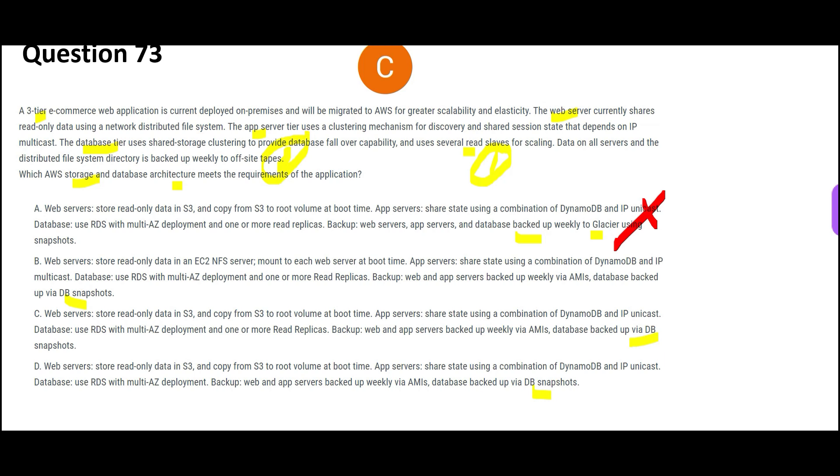Based on the third tier, that is database tier, we tried to find out A is wrong. Now let us look at the first tier, web tier. They are saying they are using distributed file system. For that tier, we all know AWS S3 is the object storage available in AWS. So whichever option does not have S3, that is wrong. So this one is wrong because it does not have S3 used - they are using EC2 NFS.